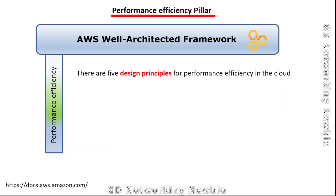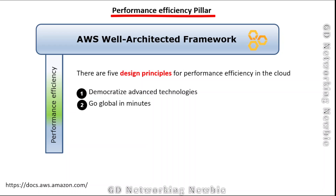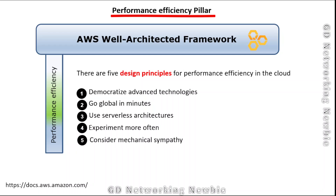There are five design principles for performance efficiency in the cloud: first, democratize advanced technologies; second, go global in minutes; third, use serverless architecture; fourth, experiment more often; and fifth, consider mechanical sympathy. These design principles help us achieve performance efficiency for our workloads.